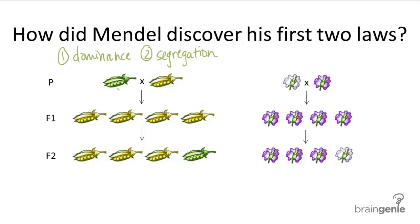For example, when he crossed green pea pods with yellow pea pods, they would only produce yellow pea pods.